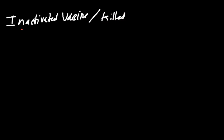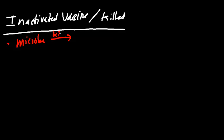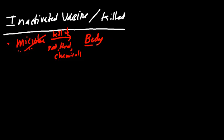So that's about all for the live attenuated. Now let's talk about the inactivated vaccine — also known as the killed vaccine. In this example, we've got a microbe. We're going to kill it via radiation, heat, or maybe chemicals — we're going to inactivate that microbe. We're going to kill it. So this microbe is now dead; however, its body remains. Its dead body remains.